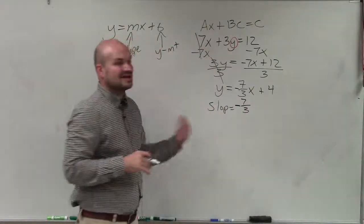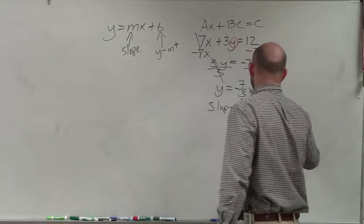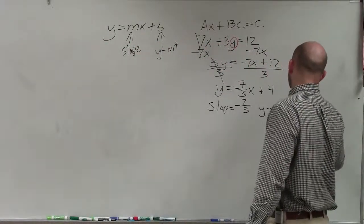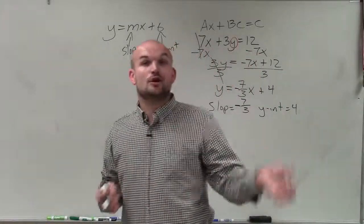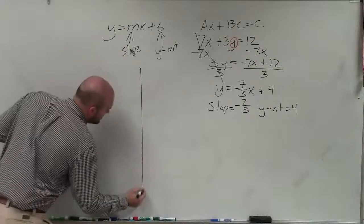And remember, that negative sign could be in the top or in the bottom. It doesn't matter which one it goes to. And then my y-intercept is going to be equal to 4. But remember, the y-intercept is a point, where the slope represents a ratio of change between any of those two points.